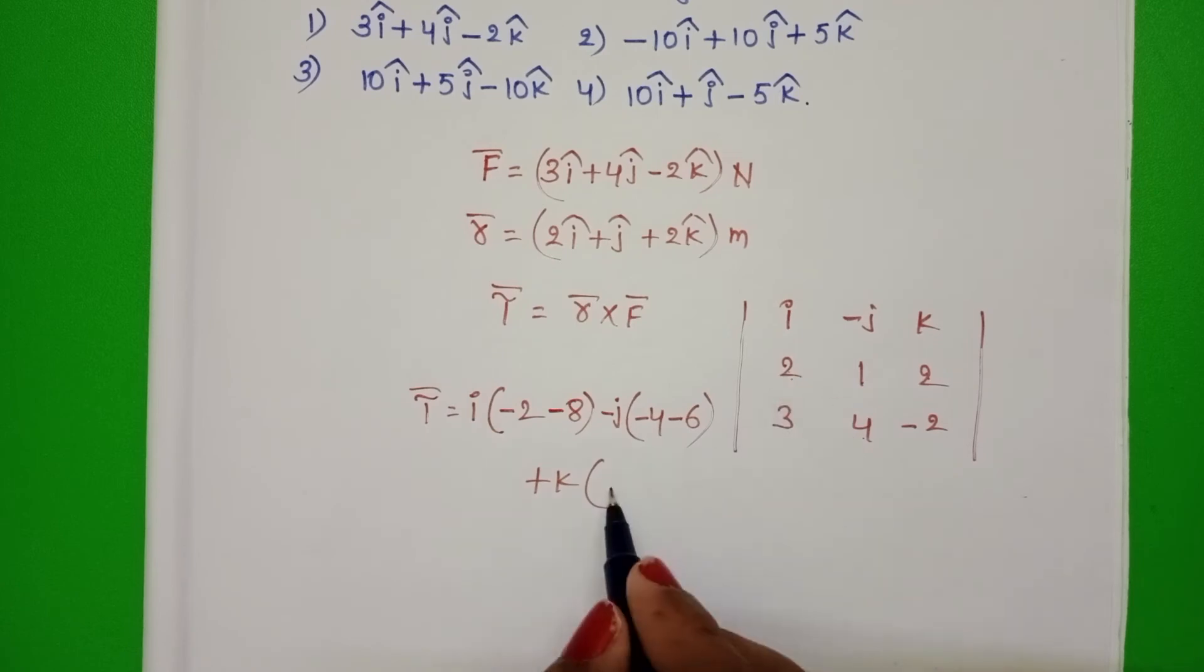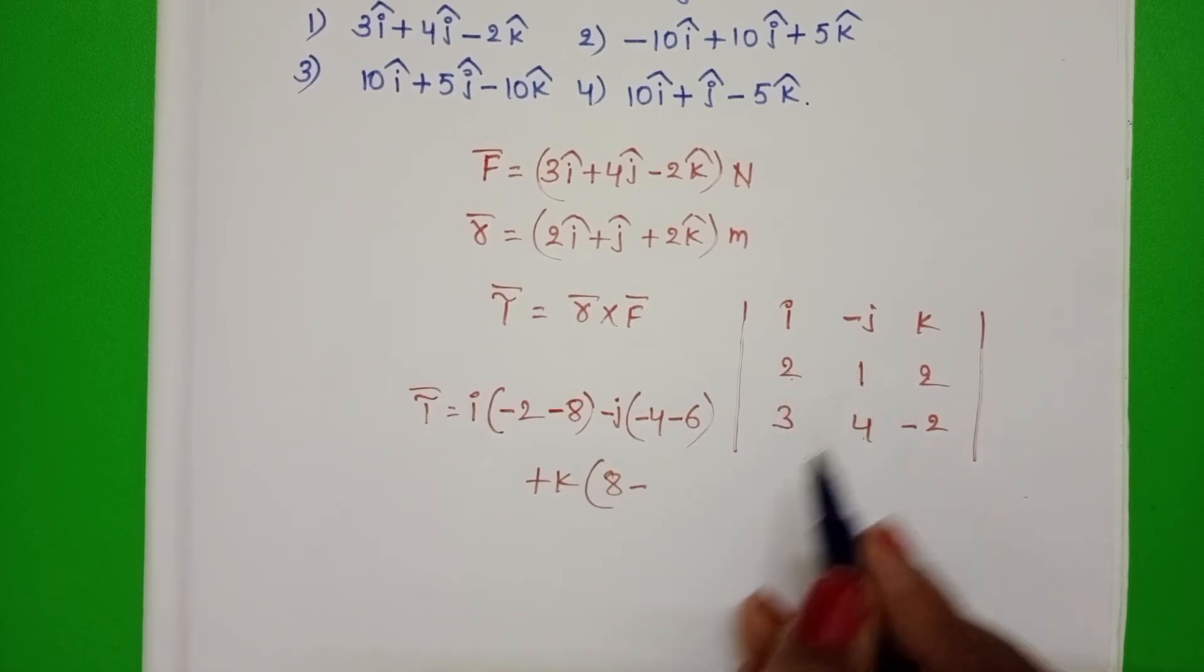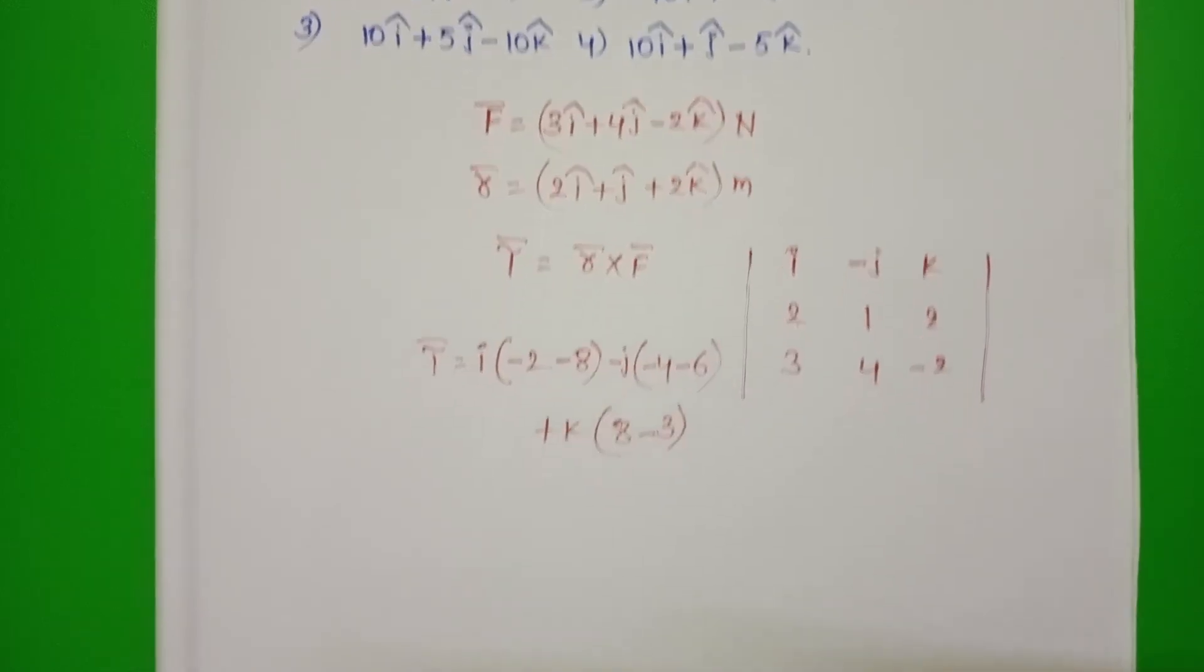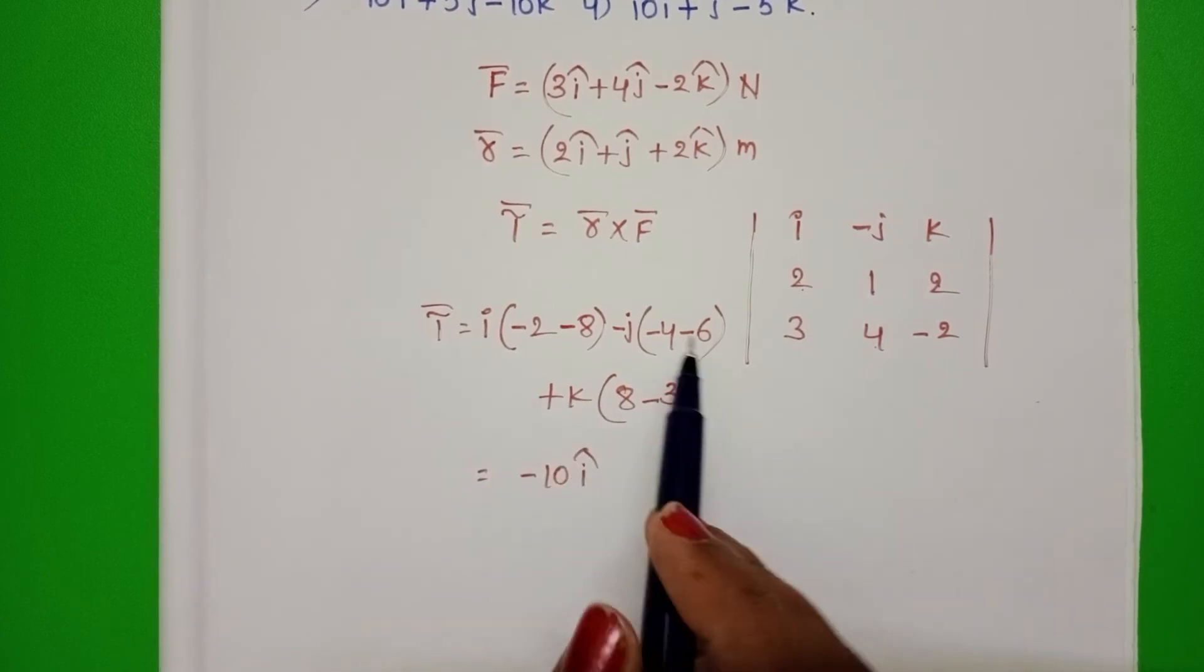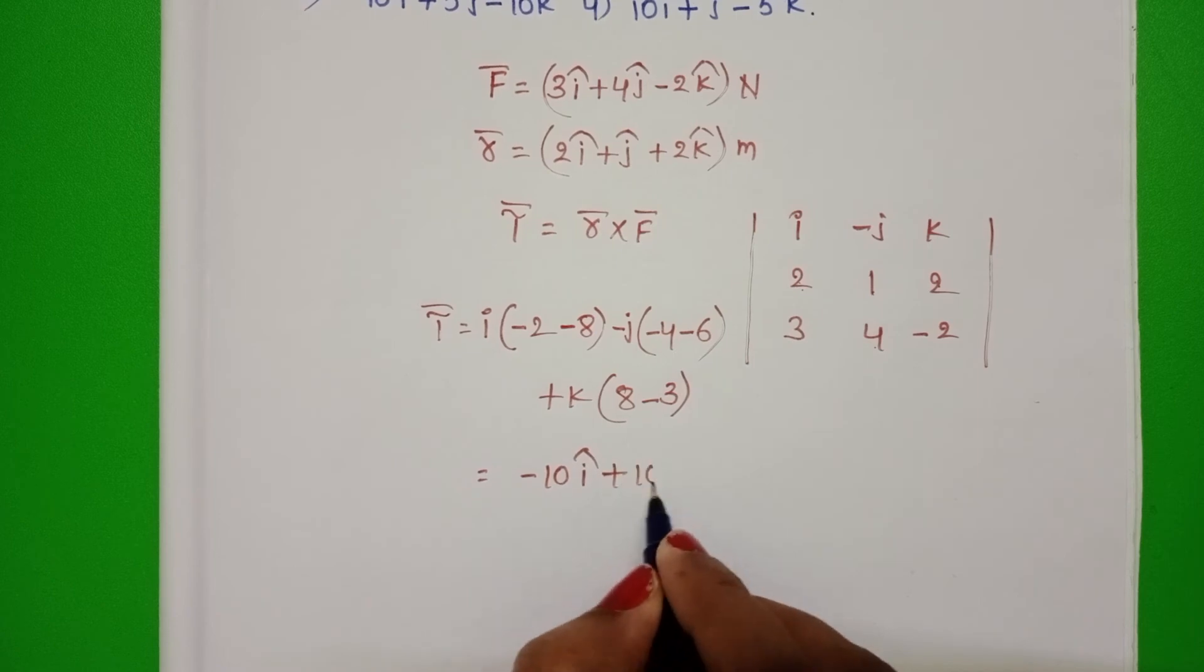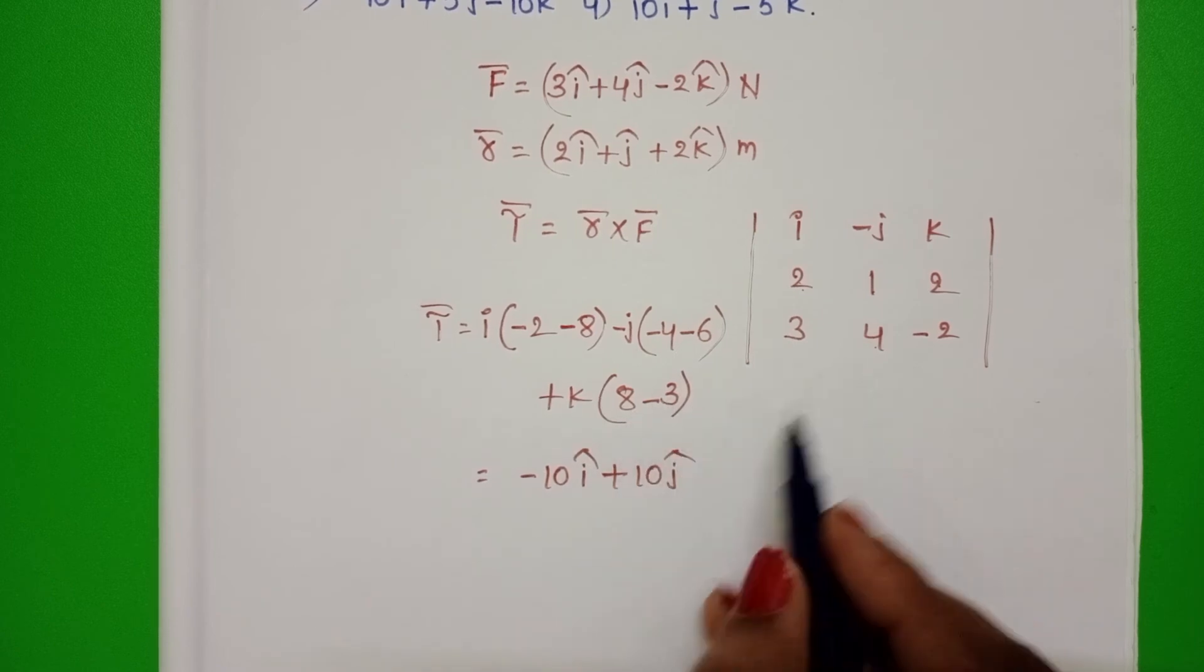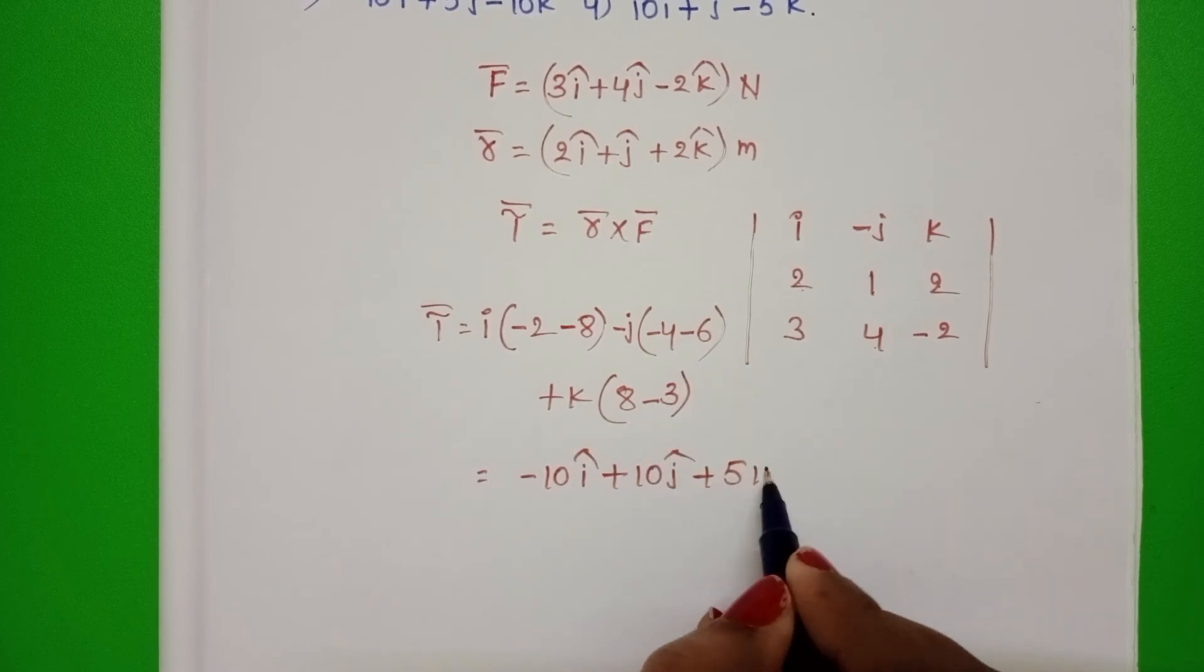Plus K into 2, 4s are 8 minus 3 into 1, 3. Minus 10 I cap minus 10 into minus J plus J cap plus J cap, 8 minus 3 plus 5 K cap.